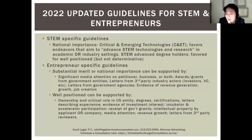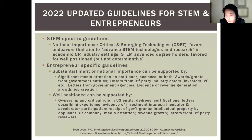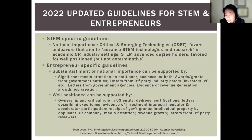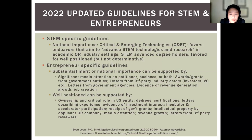STEM advanced degree holders — particularly those with a PhD in science, technology, engineering, or mathematics — can have an advantage in showing they are well positioned to advance their endeavor. However, having a STEM degree alone is not enough; you also need to show traction that your previous work has had, in the form of a record of success in your relevant field of research, such as a publication record.